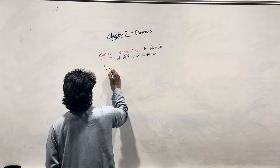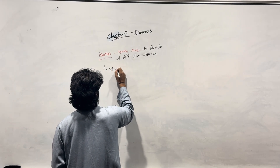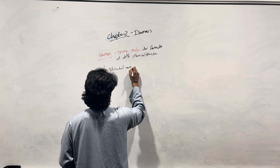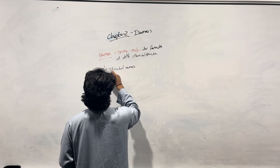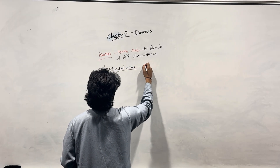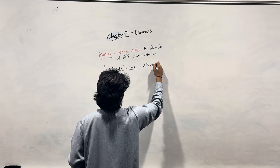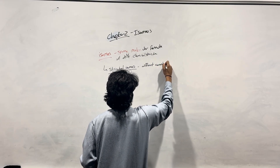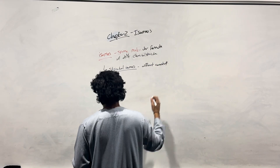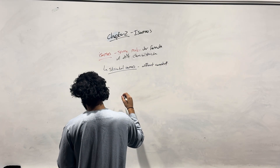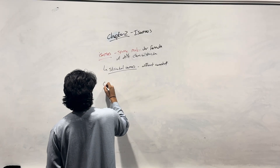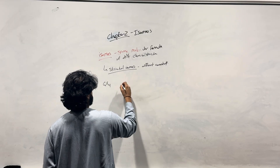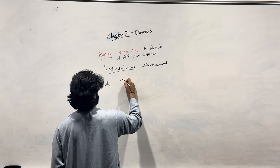So structural isomers — this is stuff like C6H14. How many ways can I draw this? I could do a straight chain of six carbons.